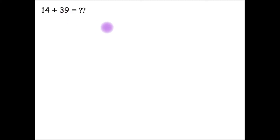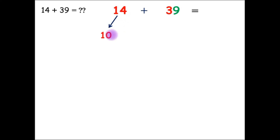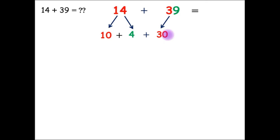The second example: 14 plus 39. In the number 14, we have 1 ten and 4 ones. So, 10 plus 4. And in the number 39, we have 3 tens and 9 ones. So, 30 plus 9.